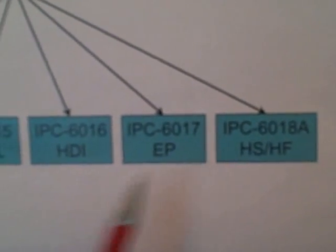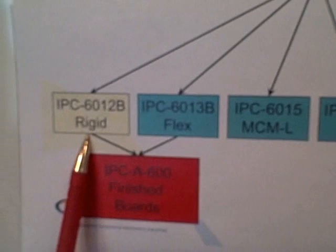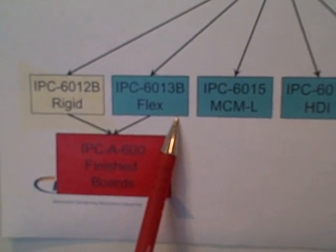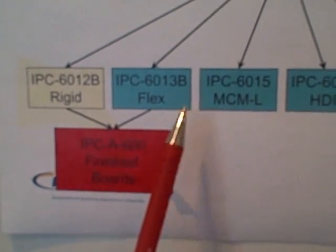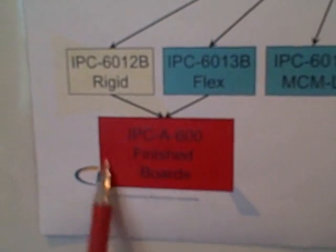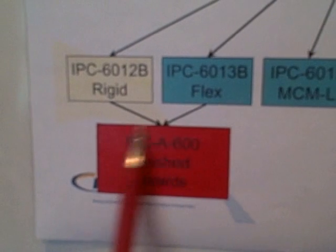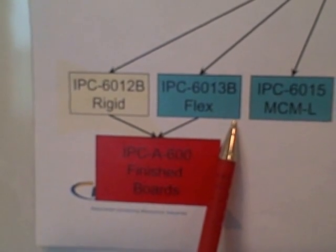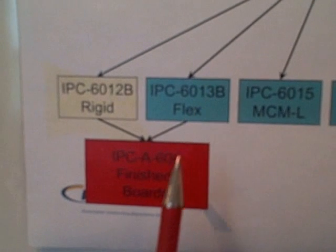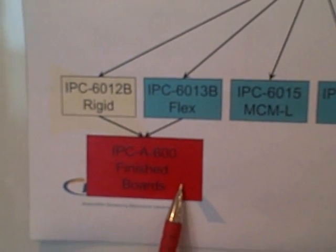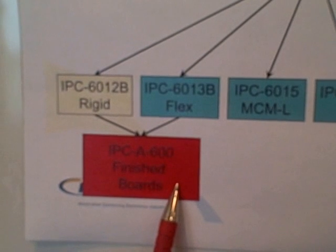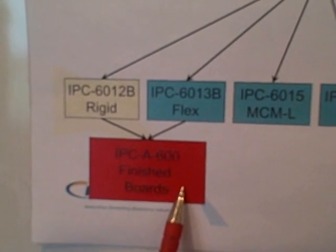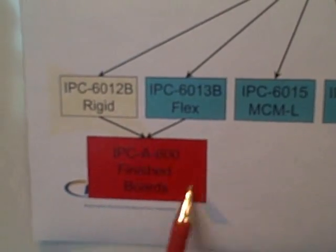What we're really going to focus on today is how IPC 6012 for rigid boards and IPC 6013 for flex are really the primary documents from which the requirements in IPC A600 are derived. 6012 and 6013 provide the actual acceptance criteria, whereas A600 simply provides a visual interpretation of those requirements, showing examples of both acceptable and rejectable versions.